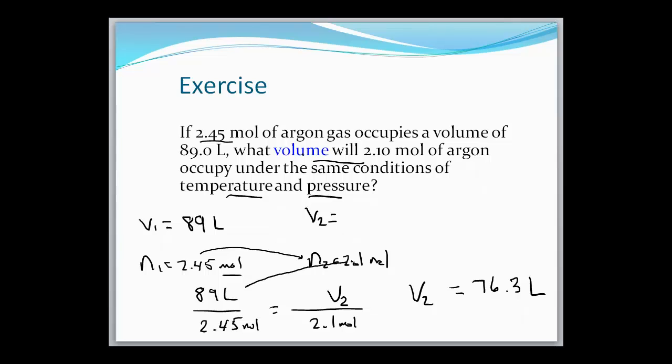So our volume went down. And that should make sense because again, volume and moles are a direct relationship. So if the one goes down, so does the other one. So when you're thinking about your equation, if you're comparing something in the numerator to something in the denominator, that's always a direct relationship. If you're comparing something in the numerator to something in the numerator, that's always an inverse relationship. So you might want to think about that both mathematically and intuitively.